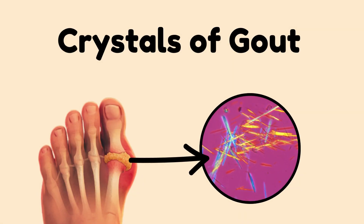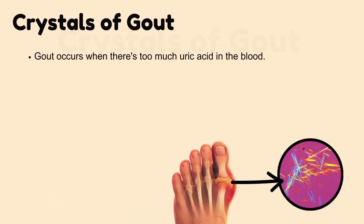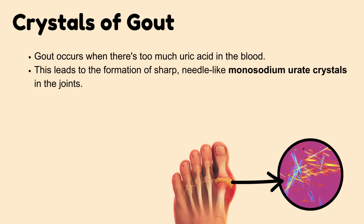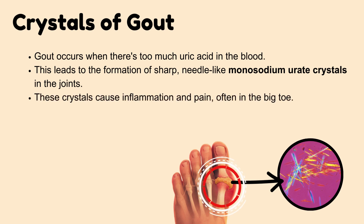Crystals of gout. Gout occurs when there's too much uric acid in the blood. This leads to the formation of sharp, needle-like monosodium urate crystals in the joints. These crystals cause inflammation and pain, often in the big toe.